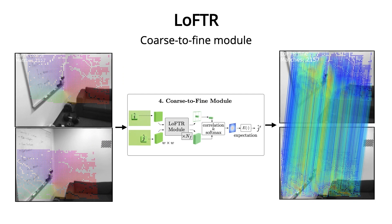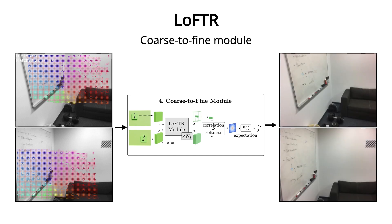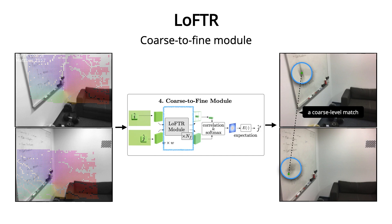A coarse-to-fine module is used to refine the matches to a subpixel level. For each coarse-level match, a pair of local windows are cropped from the fine-level feature maps around the center location. Similar to the coarse level, we use a smaller LOFTR module to transform the cropped features. Finally, we correlate the left central feature vector with every feature vector on the right image within the window to obtain a heatmap where the fine-level matches can be computed.